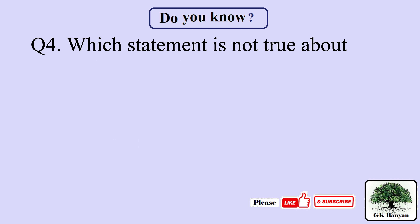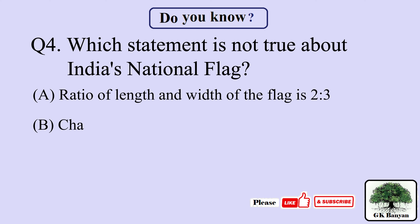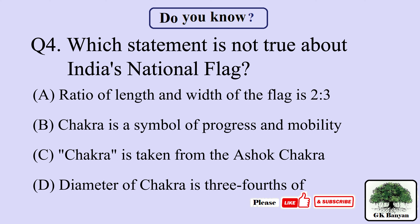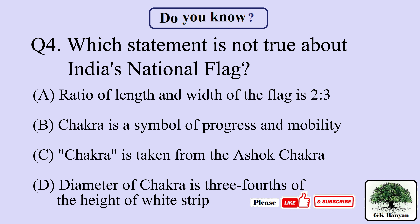Question 4. Which statement is not true about India's national flag? Your options are A. The ratio of length and width of the flag is 2:3, B. Chakra is a symbol of progress and mobility, C. Chakra is taken from the Ashoka Stambha, D. The diameter of the Chakra is three-fourths of the height of the white strip. The right answer is A.